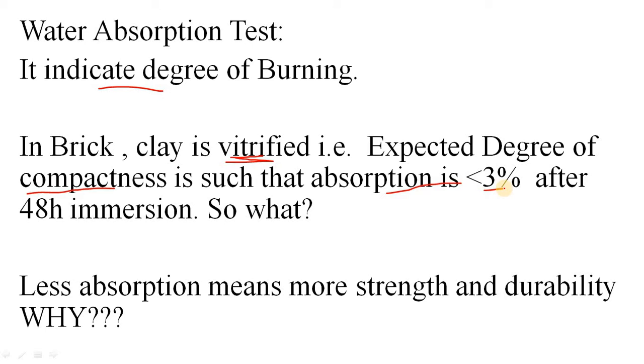For first class brick, the absorption margin is 15%, for second class it's 20%, and for high duty brick it's 10%. But if it is truly vitrified, the absorption will be only less than 3%. So what does it indicate if your compactness is very high or your absorption is very low?